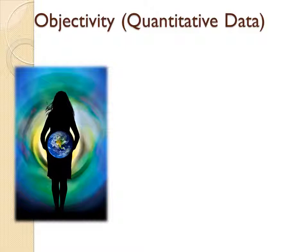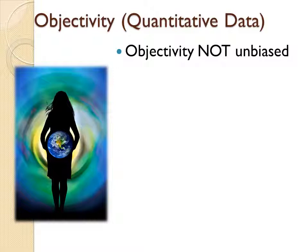This lecture is about social research and the issues we have in social research. We're going to start talking about the difference between objectivity and subjectivity. You probably think that objective means unbiased and subjective means biased. In sociology it means something a little bit different. Objectivity is not unbiased per se — there are biases that do exist in objective research. In fact, all research on human behavior is going to be biased somewhat.